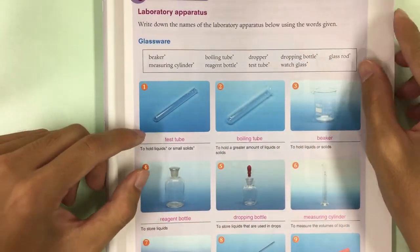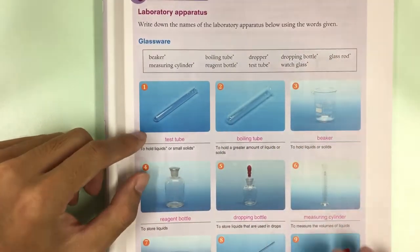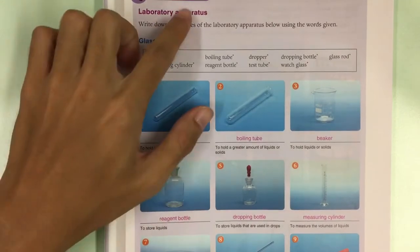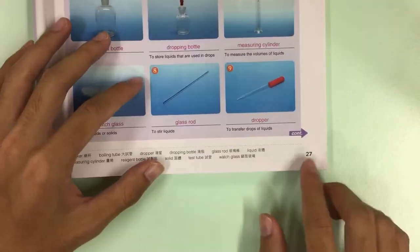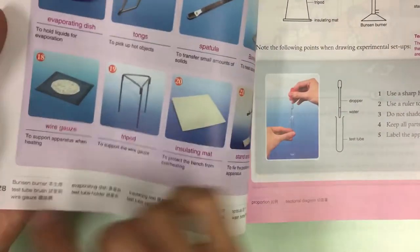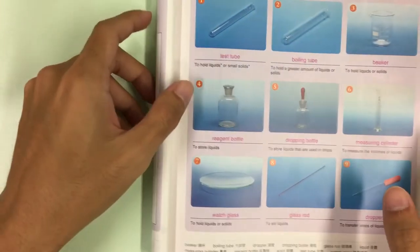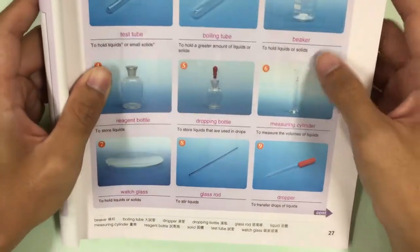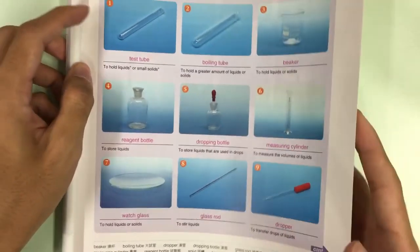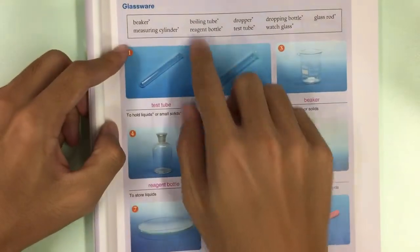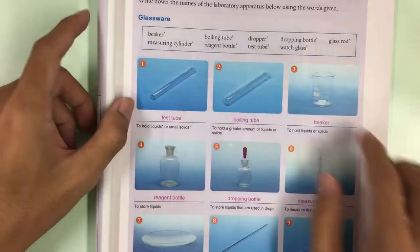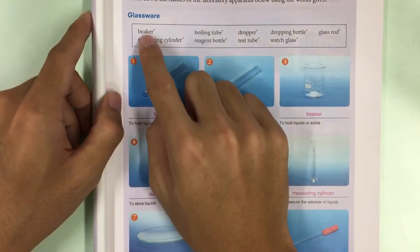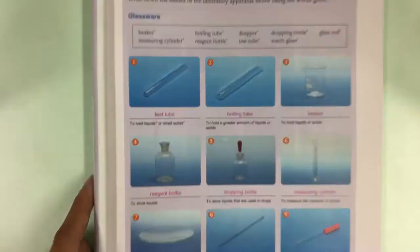In this video I will introduce some laboratory apparatus. You can look at your book on pages 27 and 28. I will introduce the apparatus one by one, showing each in the video. Remember their spelling and how to pronounce the different kinds of apparatus.